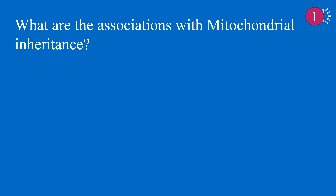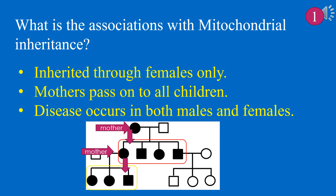What are the associations with mitochondrial inheritance? With mitochondrial inheritance, think of: 1. Inherited through females only. 2. Mothers pass on to all children. 3. Disease occurs in both males and females.